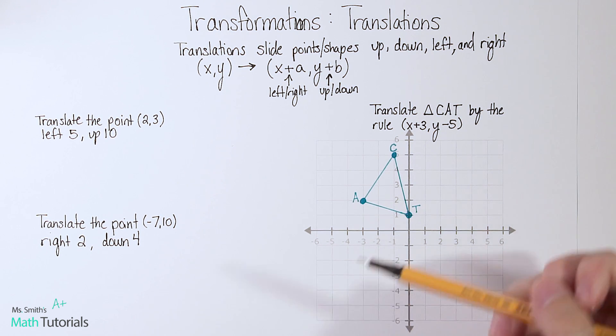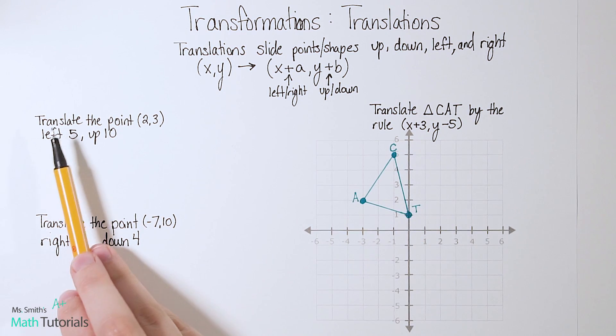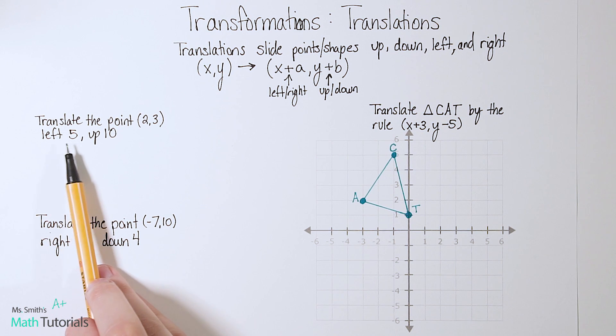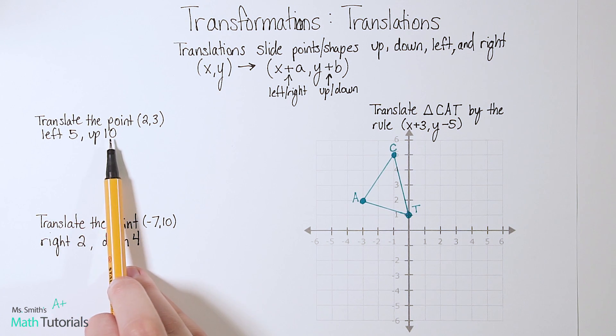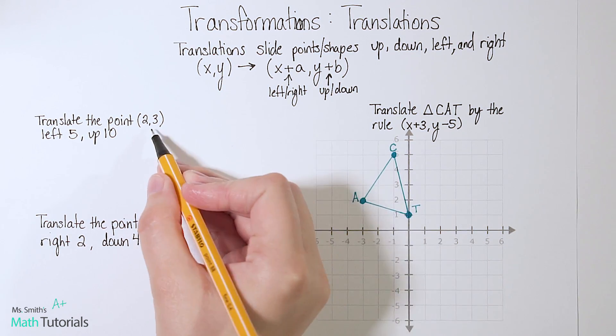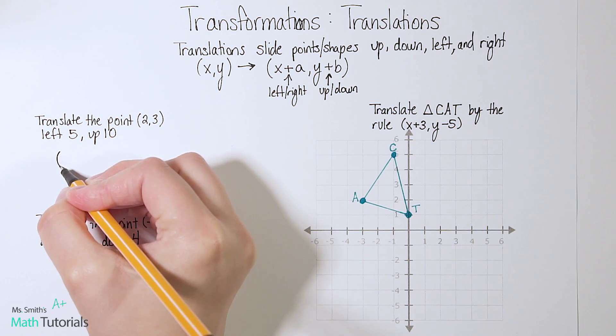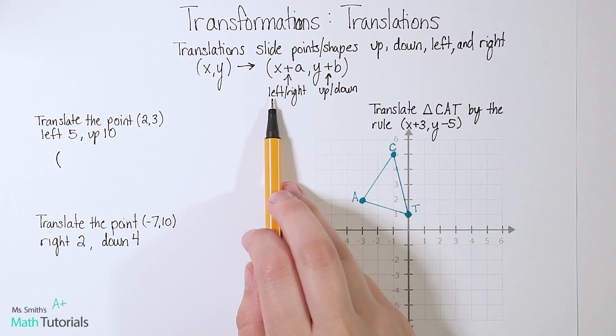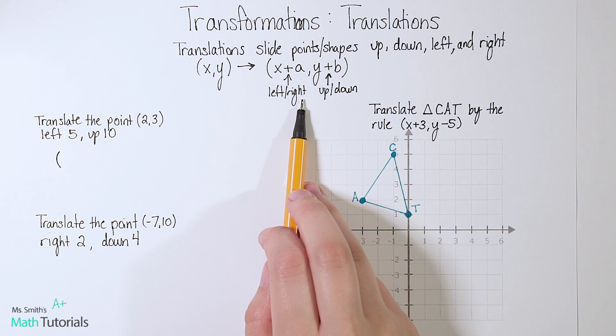So let's see this based on just a couple points. Our first one says translate the point (2,3) left 5, up 10. So I could look at a graph and count, or I could just follow the rule. So I would take this point (2,3). And remember, we said the x value is what controls left or right. If it's negative, we're moving left. If it's positive, we're moving right.